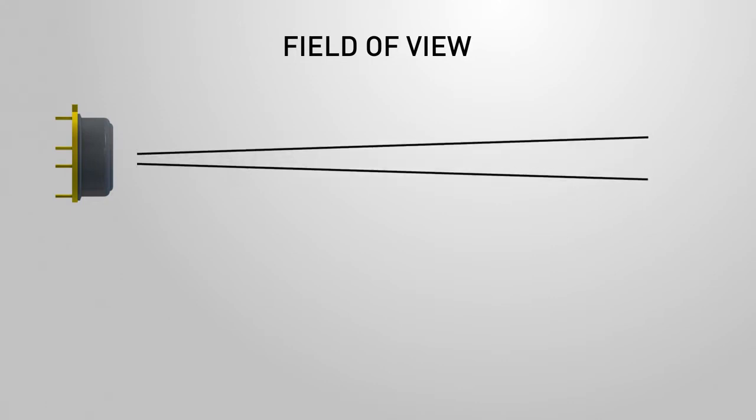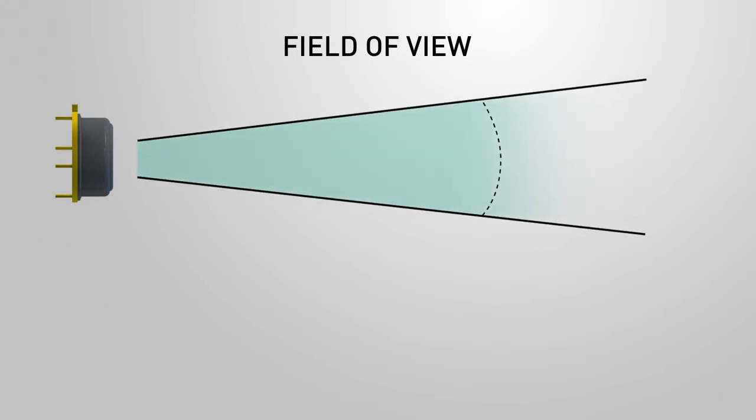The field of view of a sensor is determined by the angle in which the sensor is sensitive to thermal radiation. This means that the sensor will detect all objects in the field of view. The sensor returns the average of all objects in the field of view.